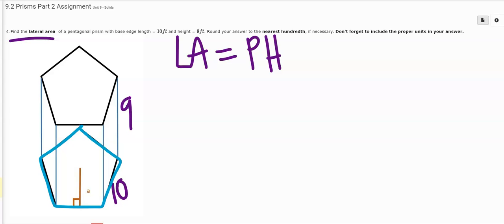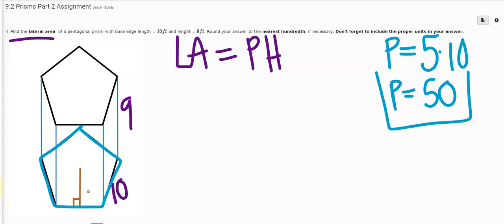So 10 plus 10 five times, or just five times 10, and I'm going to get the perimeter is equal to 50. And h was given to me. h is equal to 9.